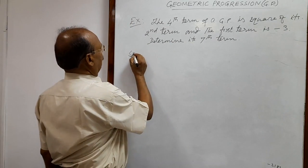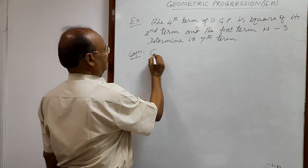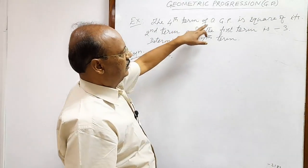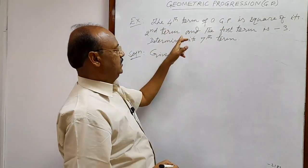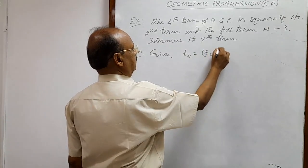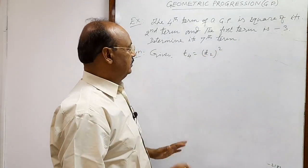So first of all, let us write what is given here. We are given the fourth term of a GP is square of its second term. Means T4 is equal to square of its second term.